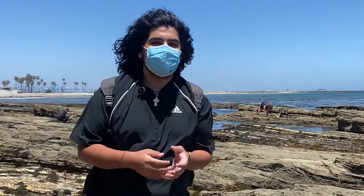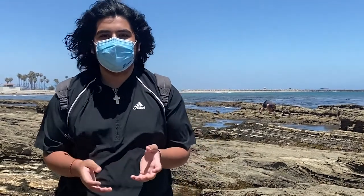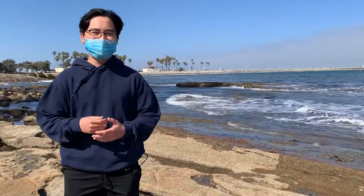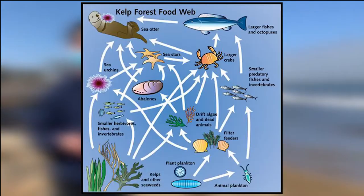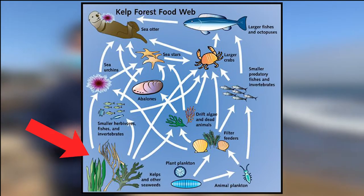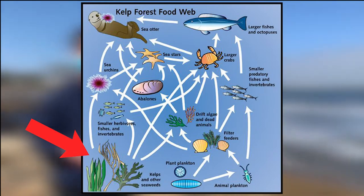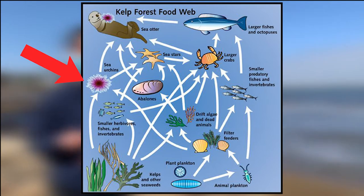But before we talk about keystone species, we need to learn what the food web is and how it functions. The food web is the natural interconnection of all food chains in an ecosystem, where certain animals or plants occupy a certain level called trophic levels. For example, primary producers such as plants and plankton occupy the first trophic level, and animals that consume the first level, such as sea urchins, occupy the second trophic level.